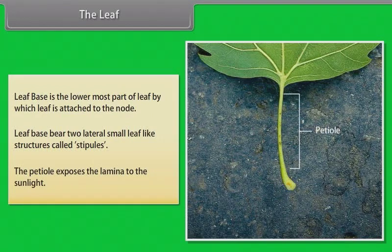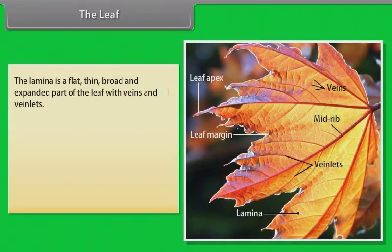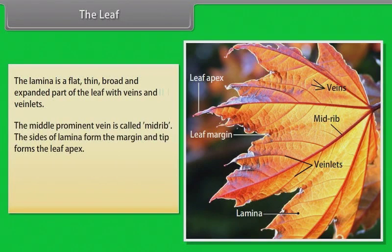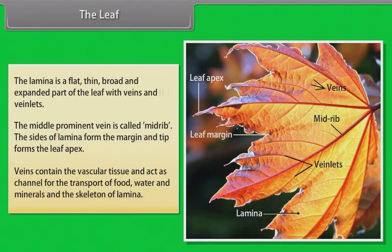The petiole exposes the lamina to the sunlight. The lamina is a flat, thin, broad and expanded part of the leaf with veins and veinlets. The middle prominent vein is called mid-rib. The sides of lamina form the margin and tip forms the leaf apex. Veins contain the vascular tissue and act as channels for the transport of food, water and minerals and the skeleton of lamina.